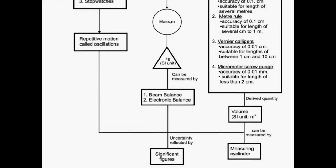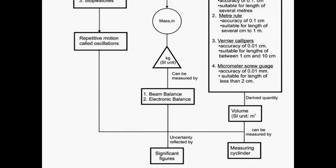A derived quantity, for example Volume, has SI unit cubic meter and can be measured by measuring cylinder. For all these measurements, uncertainty is reflected.